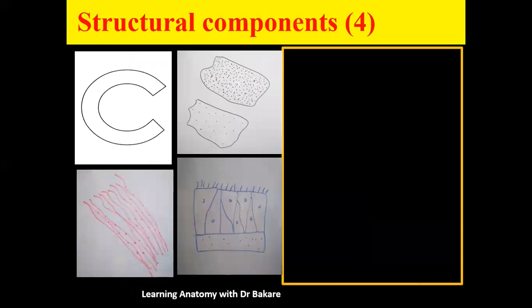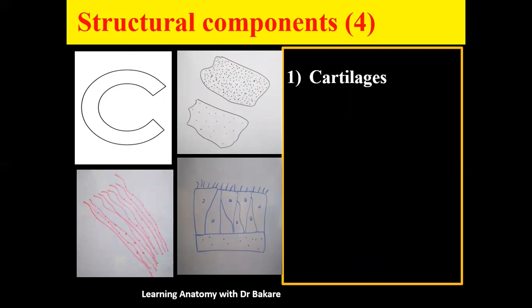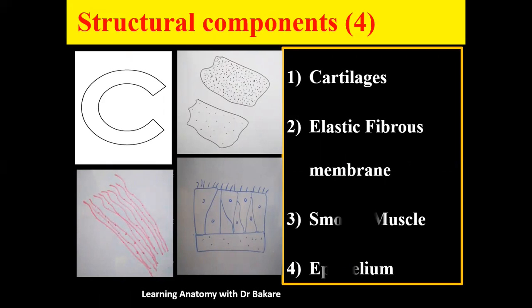The trachea is made up of four basic structural components: the cartilages (C-ring cartilages), the elastic fibrous membrane, the smooth muscle, and the epithelium. We are going to build the trachea in an artistic fashion, taking each individual structural component as raw material to produce the finished product — the trachea.